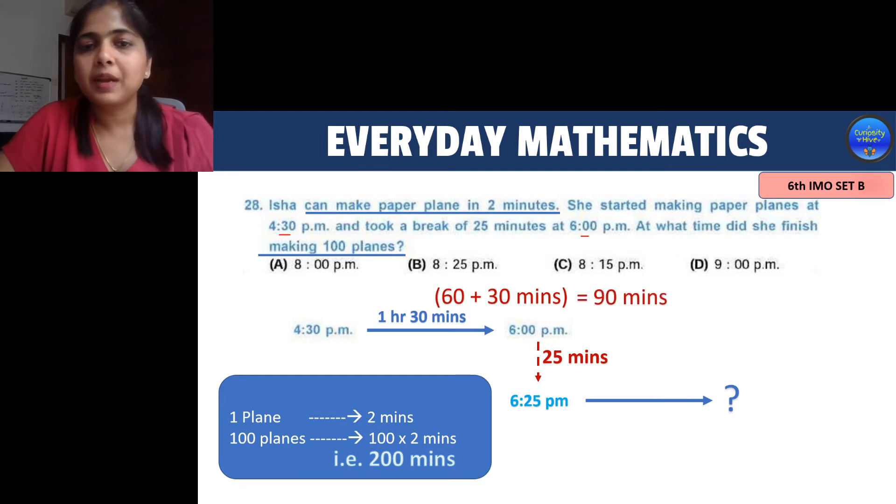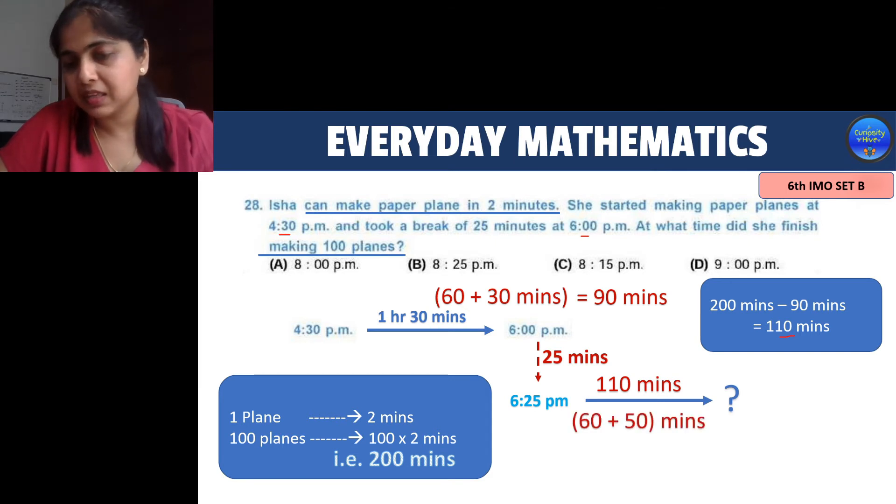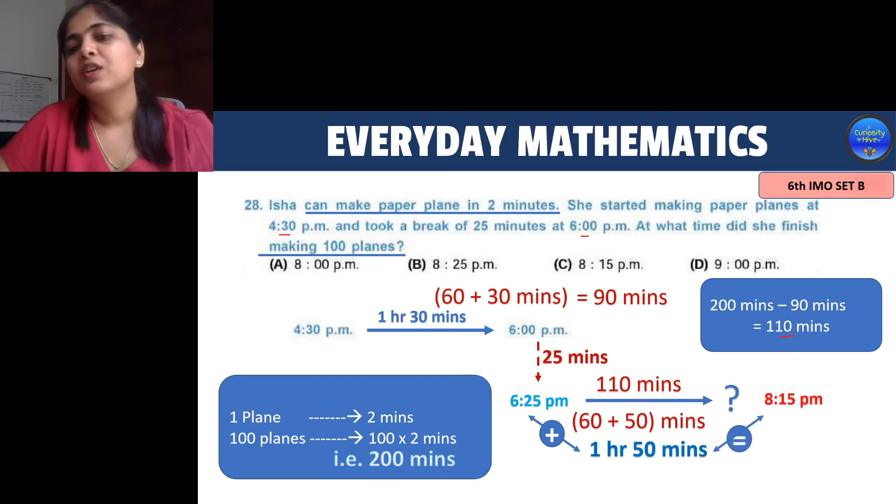So she has used up 90 minutes in the first phase of her plane making hence what she is left with is 200 minus 90 that is 110 minutes. So this 110 minutes is the time range that she starts working from 6:25 pm onwards. Now the 110 minutes if we break it in terms of 60 would be 60 plus 50 minutes. 60 minutes is nothing but 1 hour. So we need to add 1 hour 50 minutes to 6:25 pm which will give us 8:15 pm. So she finishes making the planes at 8:15 pm which is your right answer that is option C.